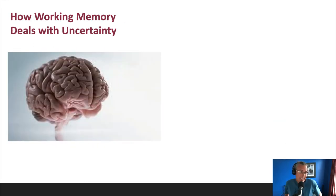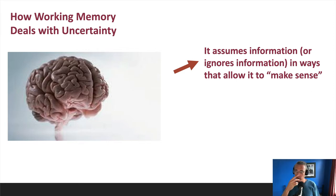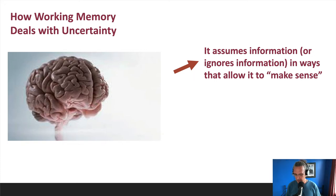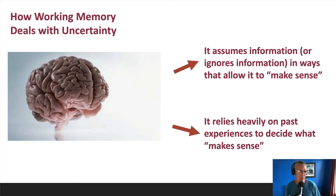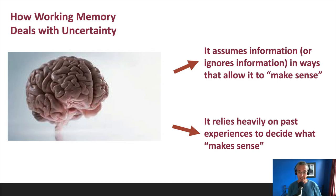This is how working memory deals with uncertainty. It will assume information, ignore information, or reorder information — it will do what it needs to do to make that partial information make sense. And by making sense, we mean it fits with things we've seen and experienced before. That's long-term memory, right? Long-term memory is helping make sense of our perceptual input. That was the story with perception.